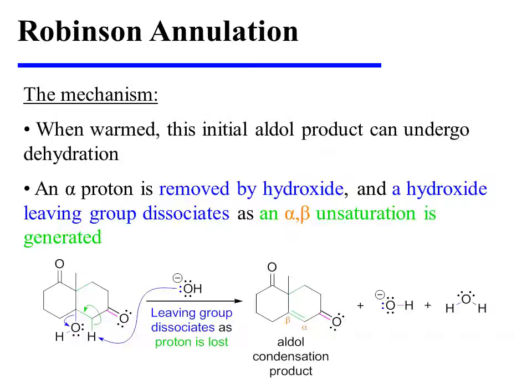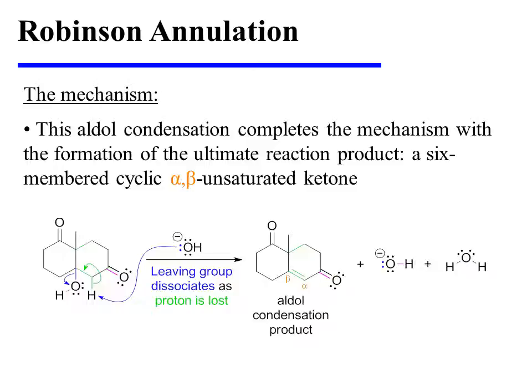When warmed, this initial aldol product can undergo dehydration. An alpha proton is removed by hydroxide, and a hydroxide leaving group dissociates from the beta position as the alpha-beta unsaturation is generated. This affords the aldol condensation product, and this aldol condensation completes the mechanism of the Robinson annulation.